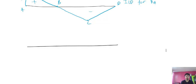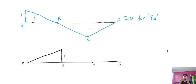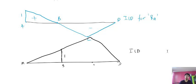Now drawing the ILD for Rb: points A, B, C, D are marked. When you remove the reaction Rb and provide a unit displacement at B, the span AB and BC respond accordingly. Since C is an internal hinge and this portion is lifted, the BC span goes upward. This is the ILD for Rb.